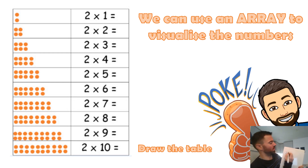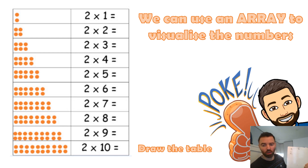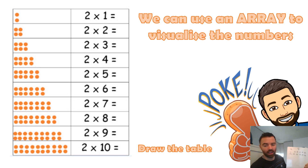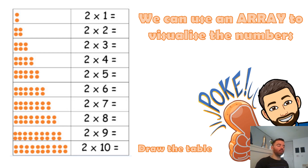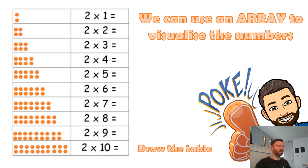Let's do two times five. So it means two groups of five. One group of five, two groups of five. And then to find the answer, I could just count them all up: one, two, three, four, five, six, seven, eight, nine, ten. Two times five is ten.